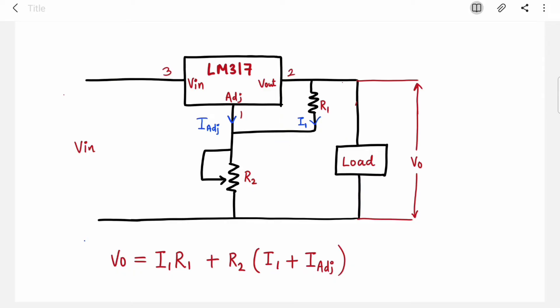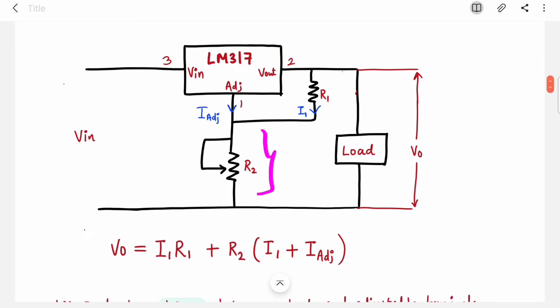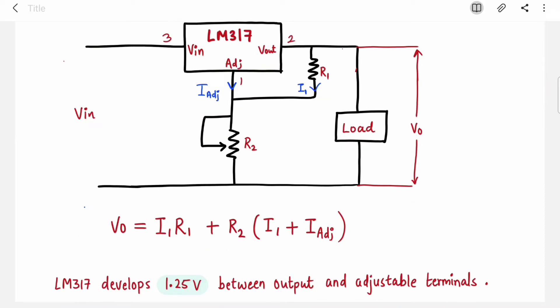Across R1, the drop is I1·R1. Drop across R2 is R2·(I1 + I_adj) because there are two currents flowing through R2: I_adj and I1. This IC develops 1.25 volts between output and adjustment terminal, which is the reference voltage.